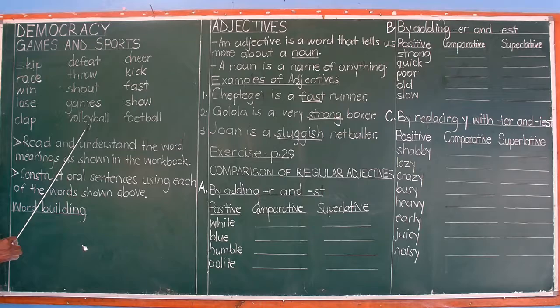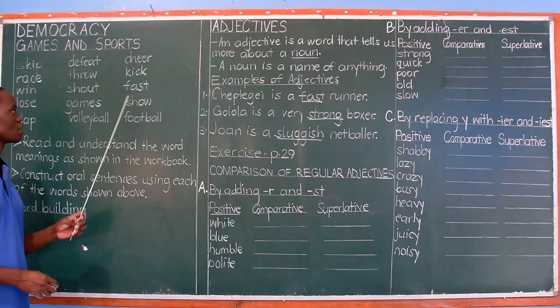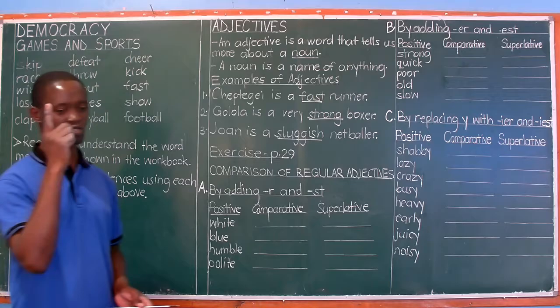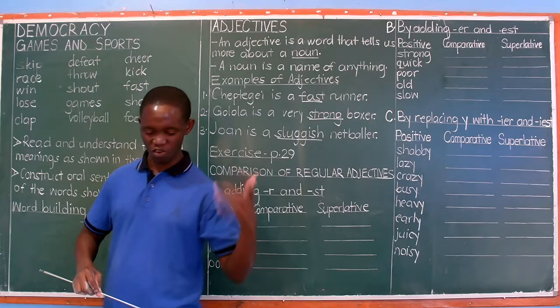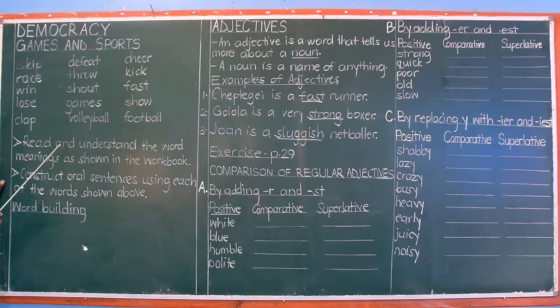Volleyball is supposed to be one word, so you are going to help make corrections in that workbook. The word volleyball is separated — make it one word. Then cheer, kick, fast, show, and finally football, which is also supposed to be written as one word. Volleyball, football, netball, basketball — all those words are written as one word.